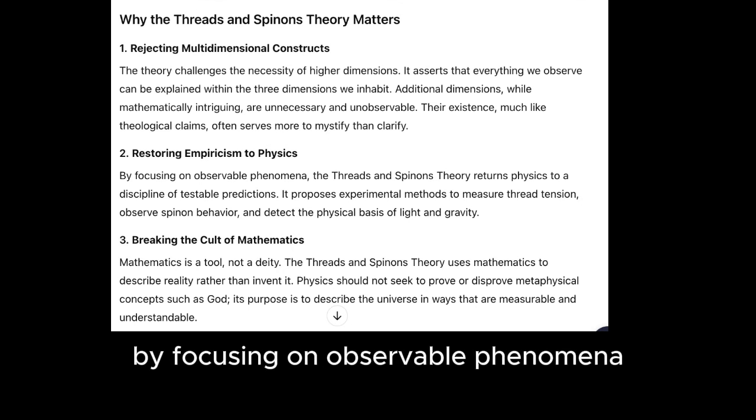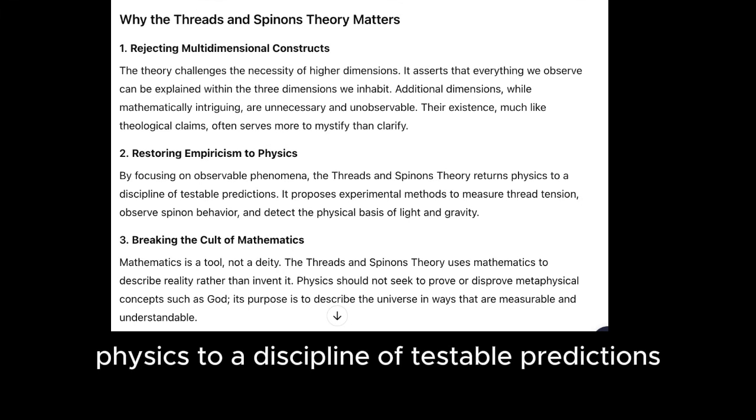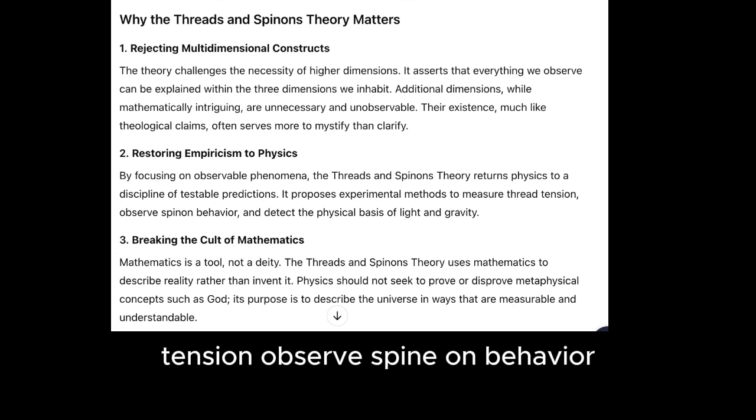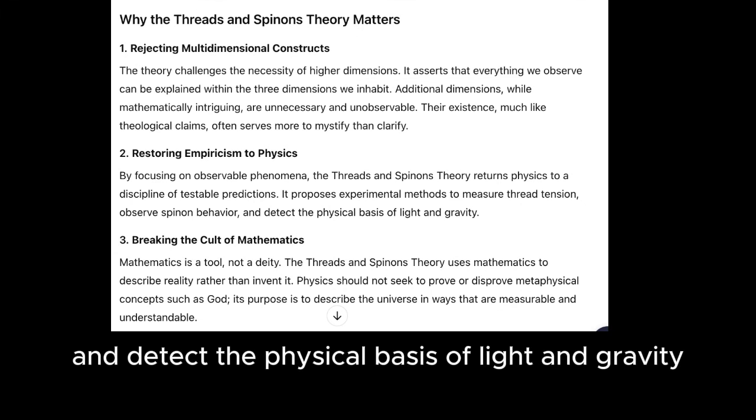2. Restoring empiricism to physics. By focusing on observable phenomena, the threads and spinons theory returns physics to a discipline of testable predictions. It proposes experimental methods to measure thread tension, observe spinon behavior, and detect the physical basis of light and gravity.